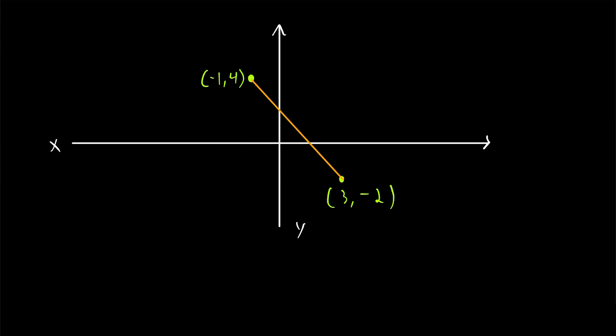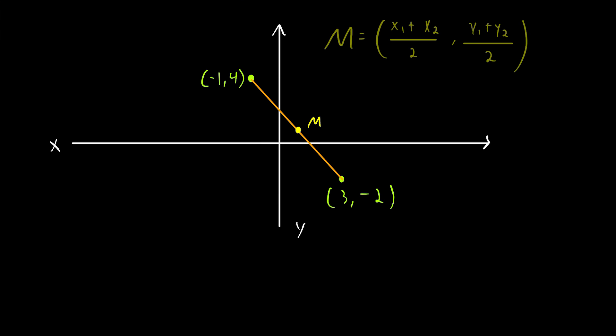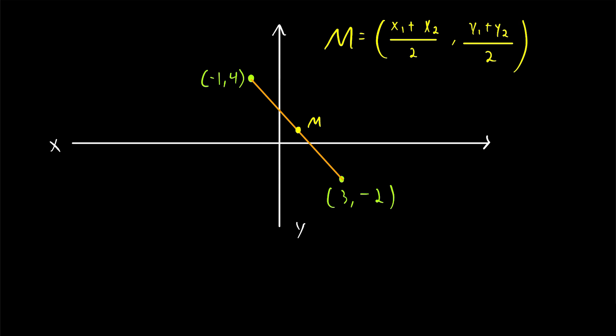Here's a practice problem to try on your own: try finding the midpoint of the points (negative 1, 4) and (3, negative 2). Let me know what you get down in the comments and I'll leave the solution in the description. Here is our midpoint formula in case you forgot. I hope this video helped you understand how to find the midpoint of two points in the XY plane. Let me know in the comments if you have any questions, need anything clarified, or have any other video requests. Thank you very much for watching.